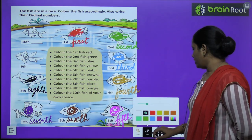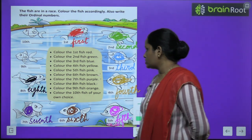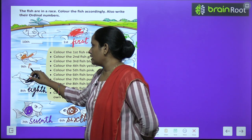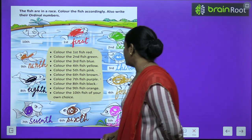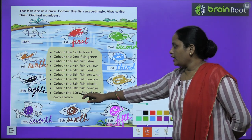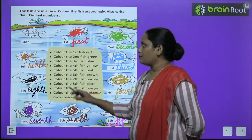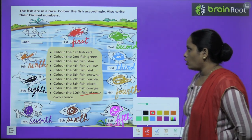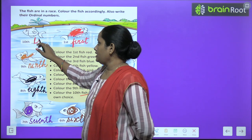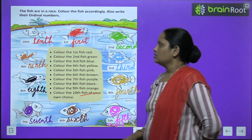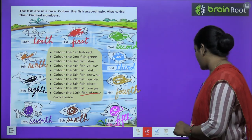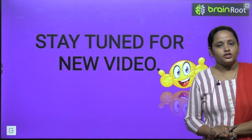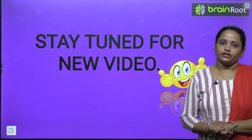Next: color the tenth fish of your own choice. One tenth fish remains — you can color it with whatever color you like and write T-E-N-T-H, tenth. So like this, you have to complete this exercise, children. I hope you enjoyed it and with this we have completed the chapter. Stay tuned for the next video. Till then, take care and thanks for watching.